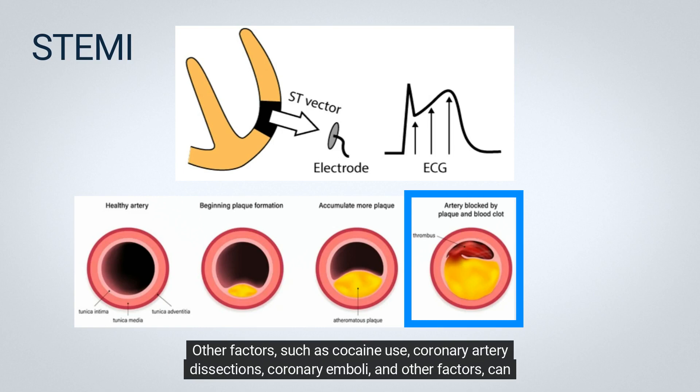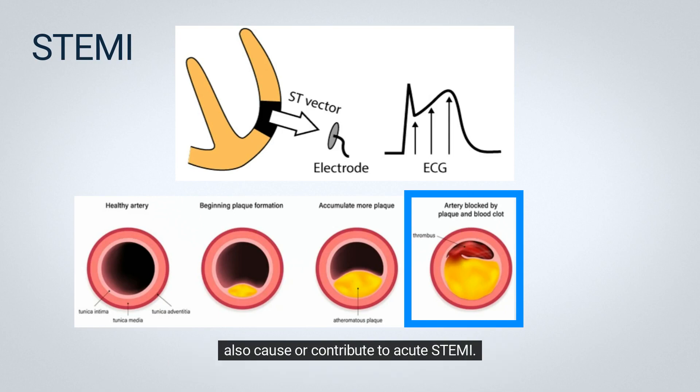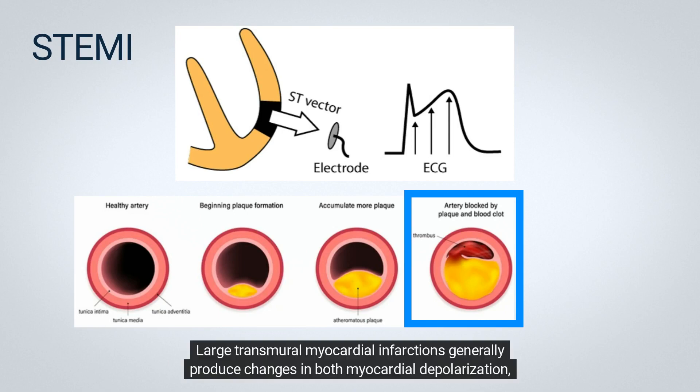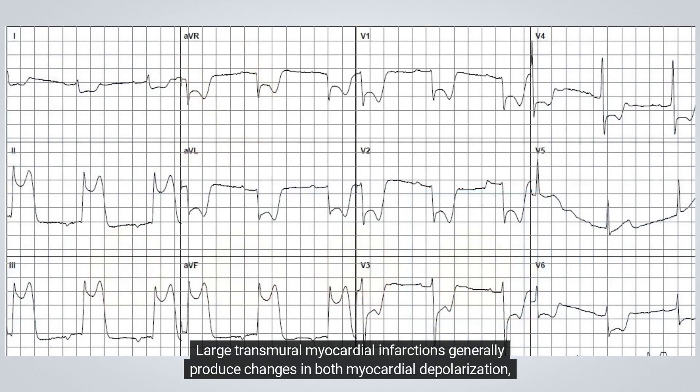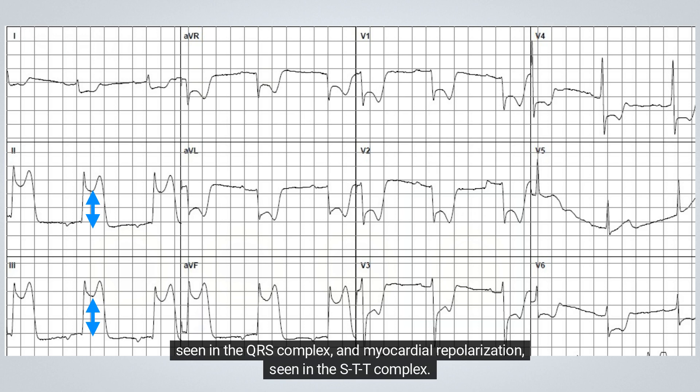Other factors, such as cocaine use, coronary artery dissections, coronary emboli, and other factors, can also cause or contribute to acute STEMI. Large transmural myocardial infarctions generally produce changes in both myocardial depolarization, seen in the QRS complex, and myocardial repolarization, seen in the STT complex.